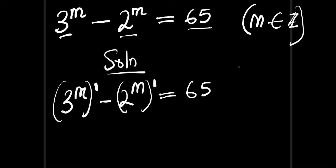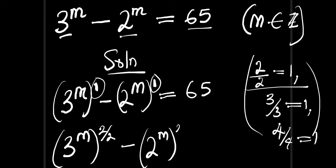You can also use 3 divided by 3 which is 1, or 4 divided by 4 which is 1, but in this particular context we are going to make use of 2 divided by 2. So we are going to have 3 to the power of m, all to the power of 2 divided by 2, minus 2 to the power of m, all to the power of 2 divided by 2, and this equals 65.